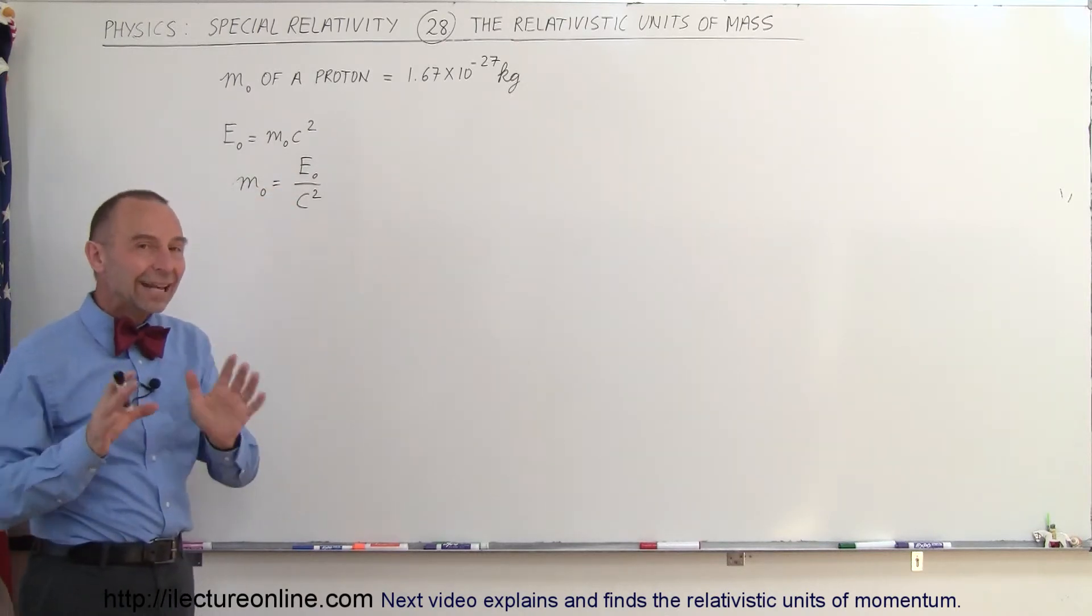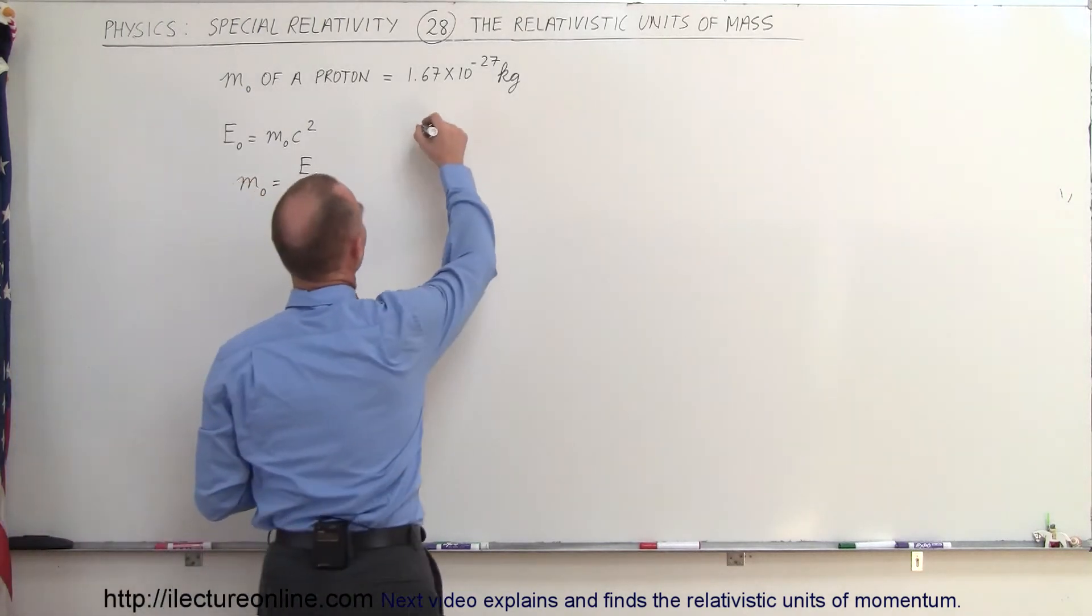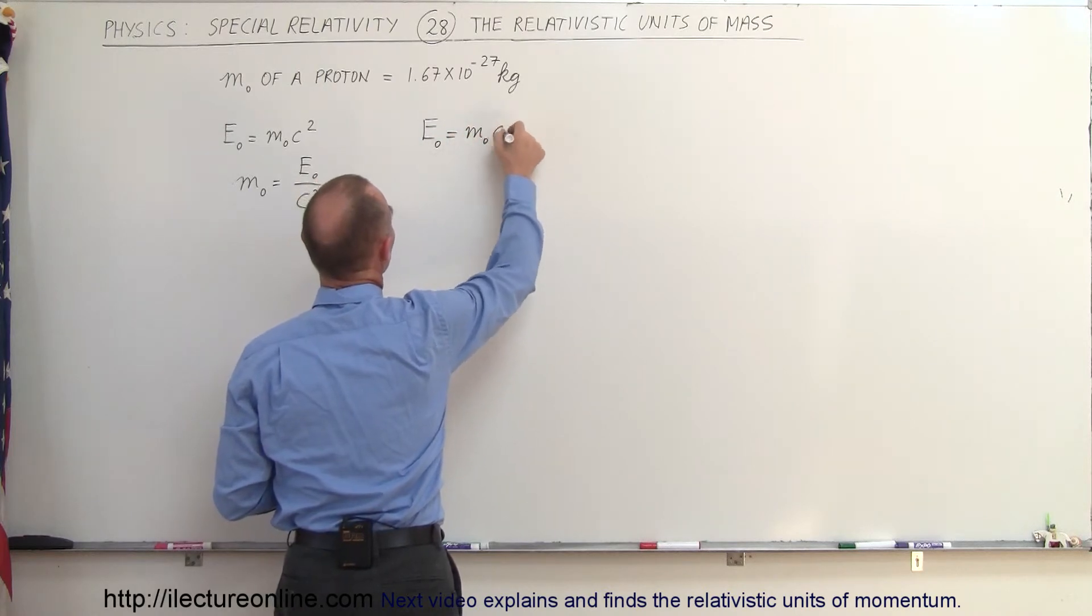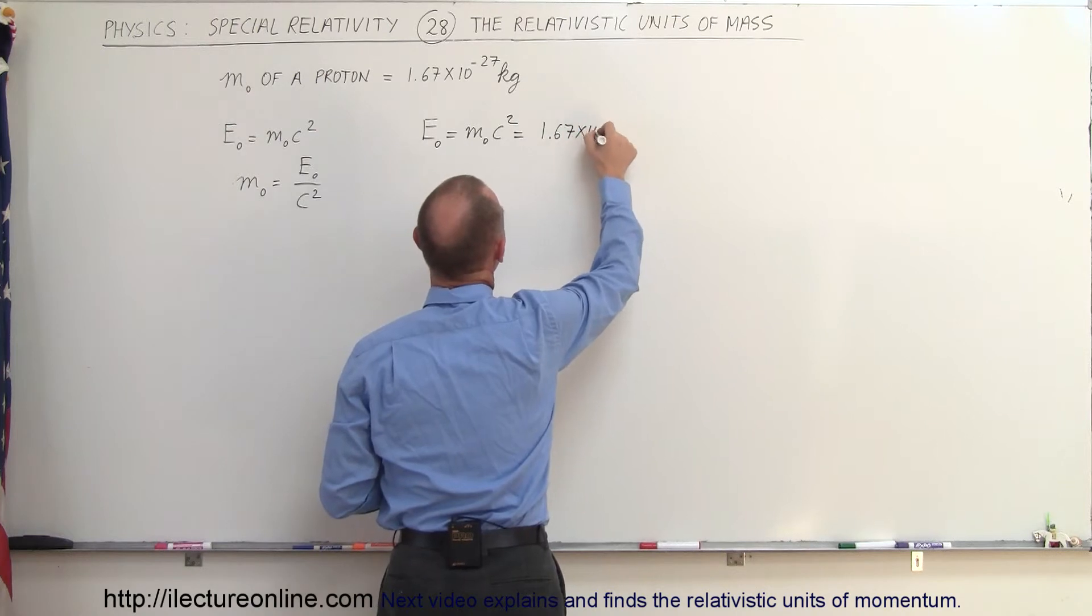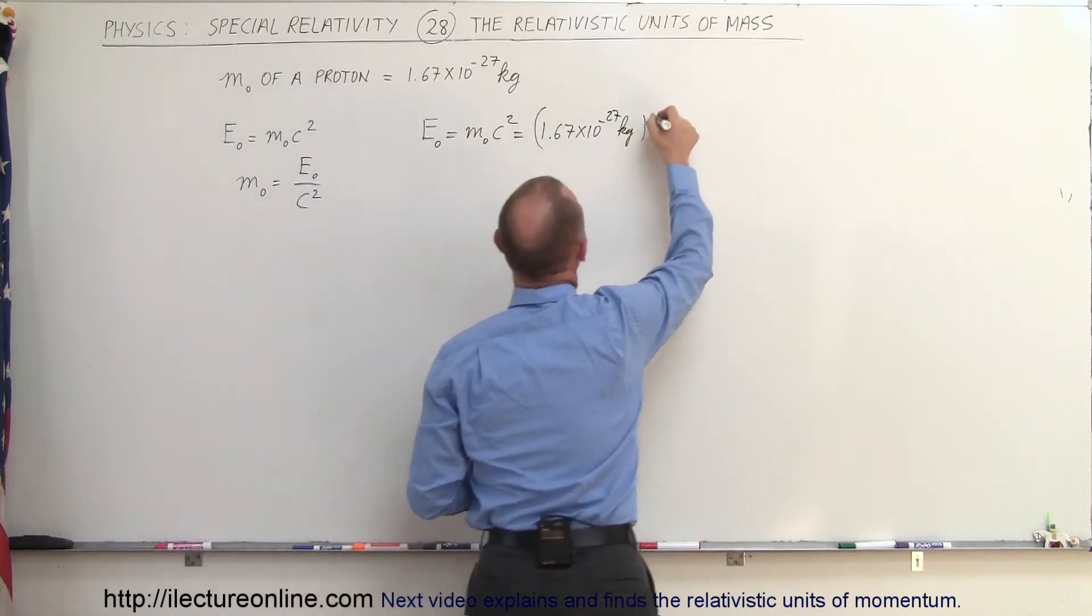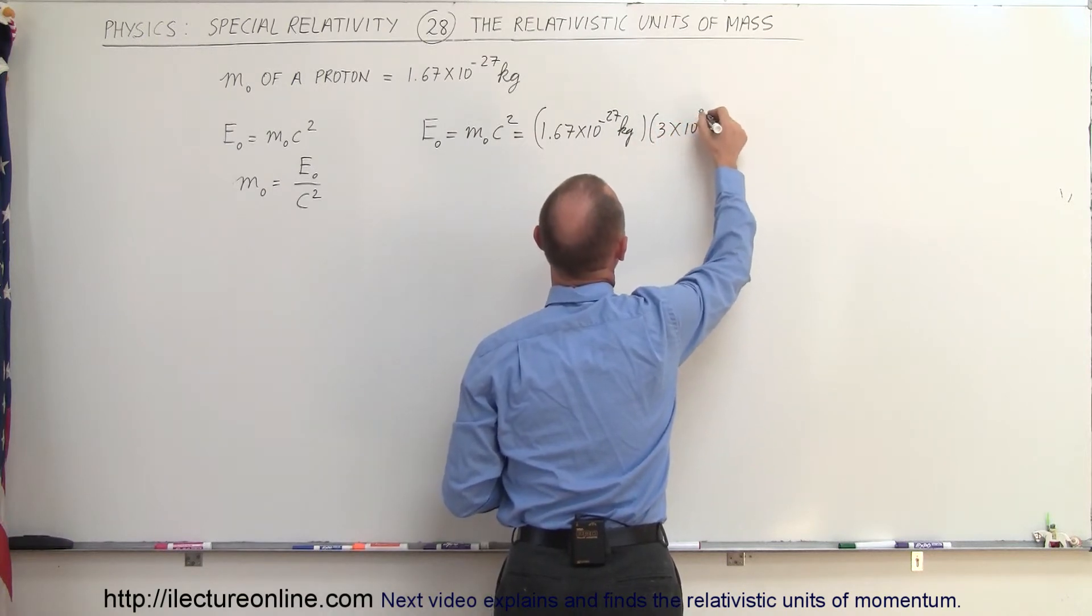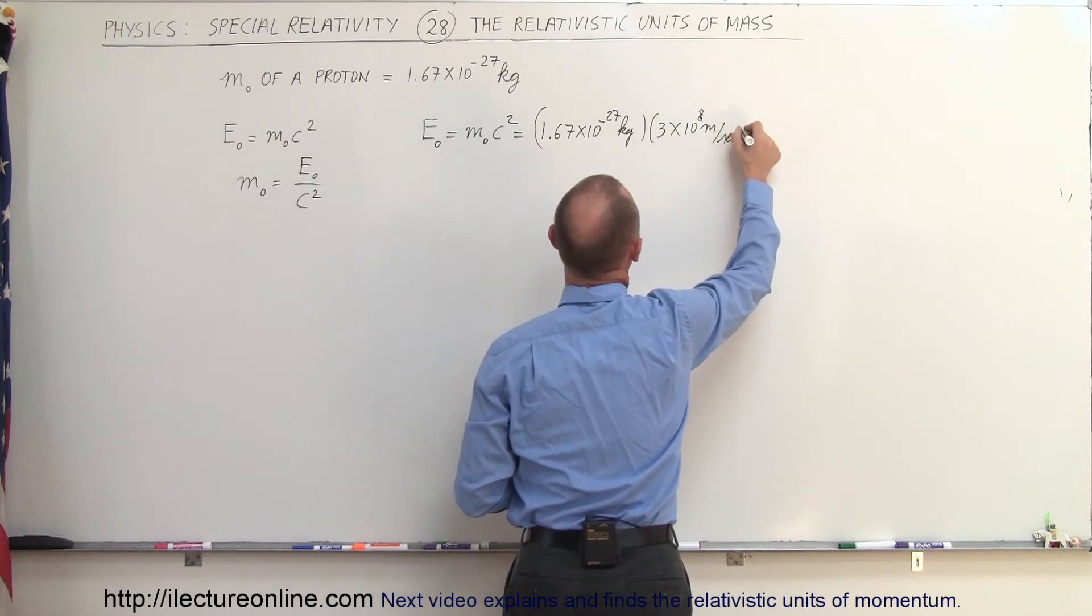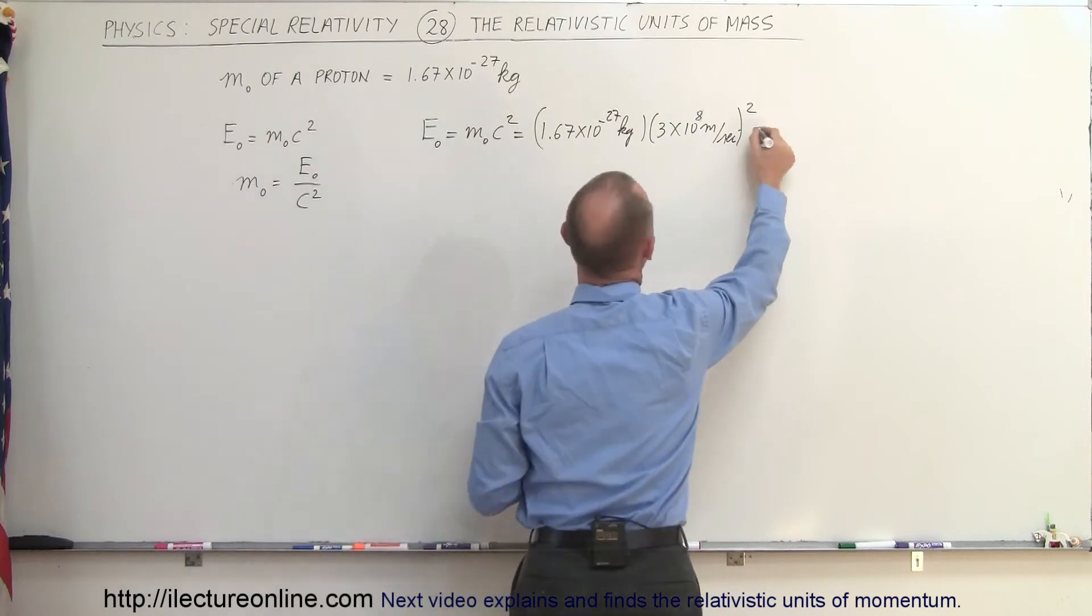Now let's calculate the energy of a proton using this equation. So we can say that the rest energy of a proton is equal to the rest mass times C squared, which is equal to 1.67 times 10 to the minus 27 kilograms times 3 times 10 to the 8 meters per second quantity squared, because we have to square that. And so when we do that, what do we get?